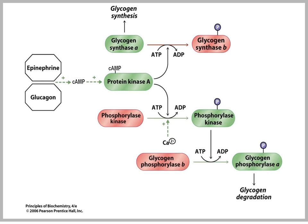This is just opposite to what we said with insulin action on glycogen. Here, phosphorylation of enzymes means that they are active. So glycogen phosphorylase, which is the enzyme necessary for glycogen degradation, has to be phosphorylated in order to be active and lead to glycogenolysis.